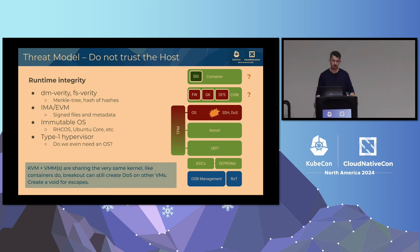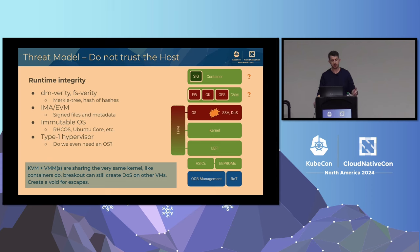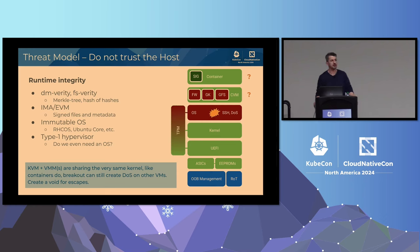For runtime integrity of the operating system, there are tools like dm-verity and fs-verity. Those tools build a Merkle tree — hashes of hashes — giving you a hash or fingerprint of your operating system and file system that you can compare to an expected value. Then we have the Linux Integrity Measurement Architecture and EVM — cryptographically measured files and metadata you can compare to expected values. And there are approaches like immutable operating systems such as Fedora CoreOS or Ubuntu Core, preventing accidental writes to your user partition.